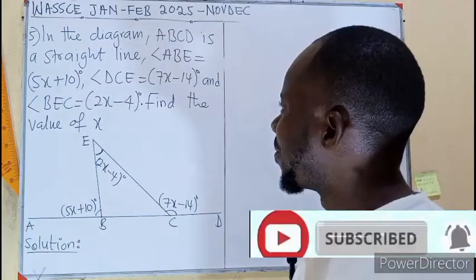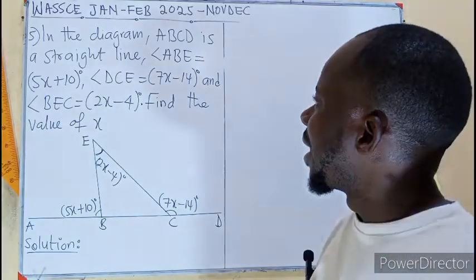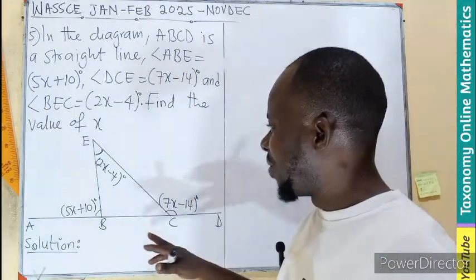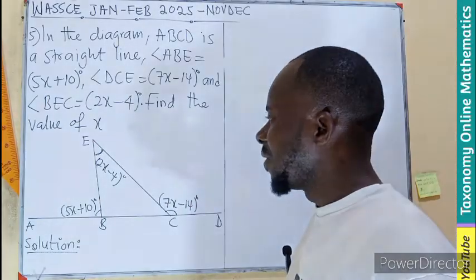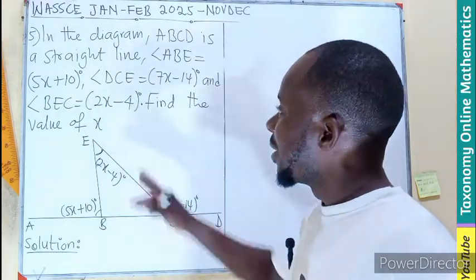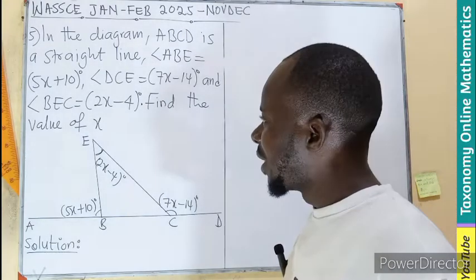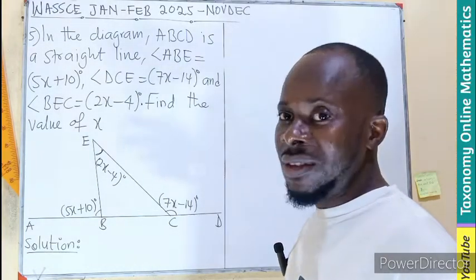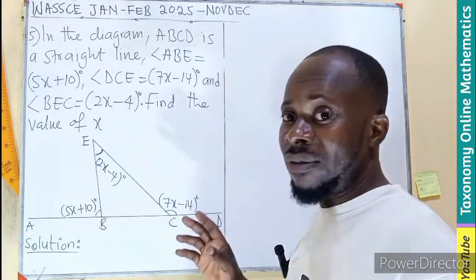In the diagram, ADCD is a straight line and angle ABE is 5x plus 10. The angle DCE is 7x minus 14 and angle BEC is 2x minus 4. We are looking for the value of x.